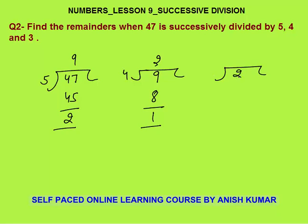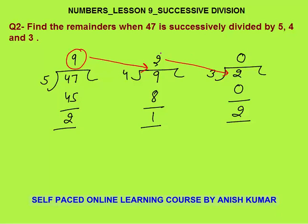The second quotient 2 becomes the number or dividend for the third division. The third divisor is 3. Now 2 is not divisible by 3, so the quotient is 0 and the remainder is 2. The quotient of the first division becomes the number for the second, and the quotient of the second division becomes the number for the third. So my answer is remainders 2, 1, and 2.